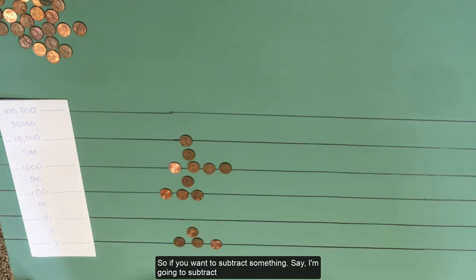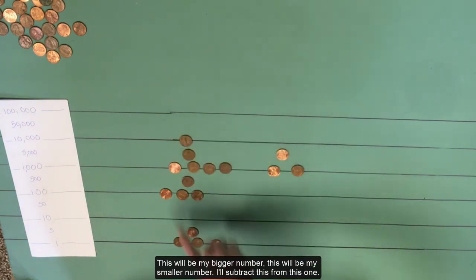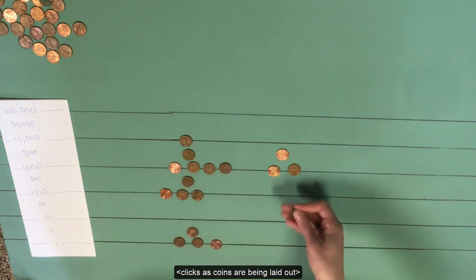Subtraction is very similar. So if you want to subtract something, say I'm going to subtract, this will be my bigger number. This will be my smaller number. I'll subtract this from this one.